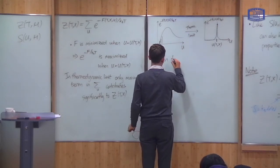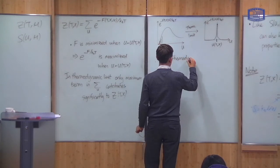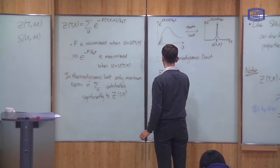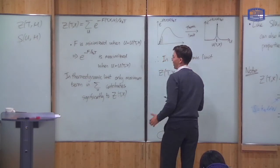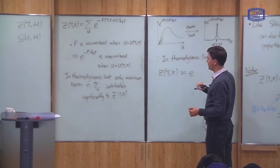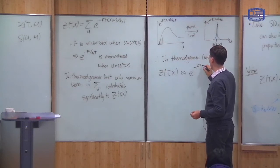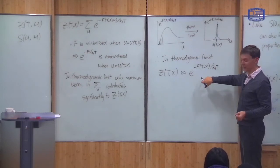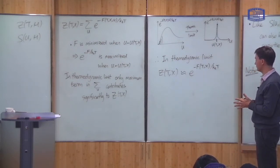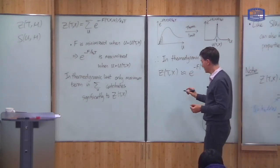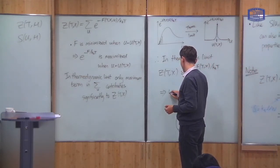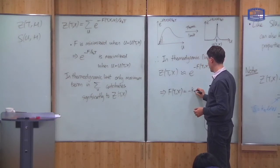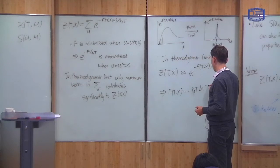Therefore, in the thermodynamic limit, Z(T, X) is approximately equal to only the maximum value of the sum, which occurs at the minimum value of F — which is exactly what I called the Helmholtz free energy. I simply replace the sum by its maximum value. This gives a very simple relationship between the two, usually written in the inverted form: the Helmholtz free energy F = -k_B T ln(Z).